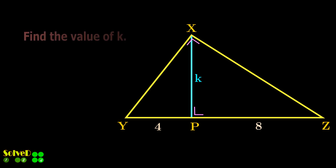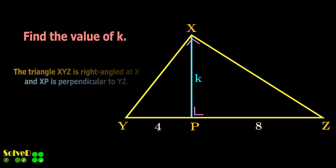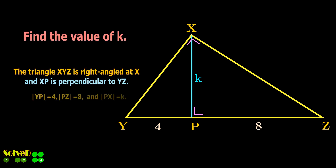Find the value of K. The triangle XYZ is right-angled at X, and XP is perpendicular to YZ. The lengths of YP and PZ are given.